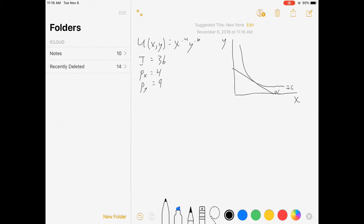Hello everybody. Welcome to my video on utility maximization. We've got a consumer who's got to choose between two goods. In this example, they've got $36. Good x costs $4. Good y costs $9.